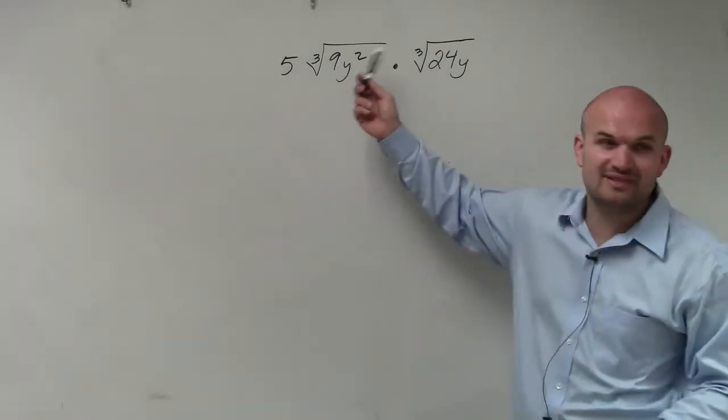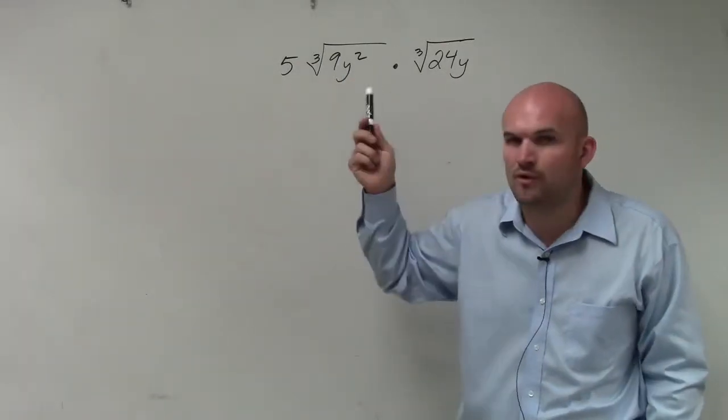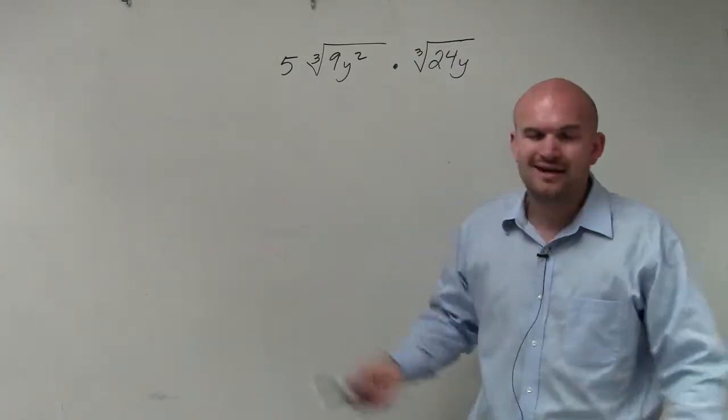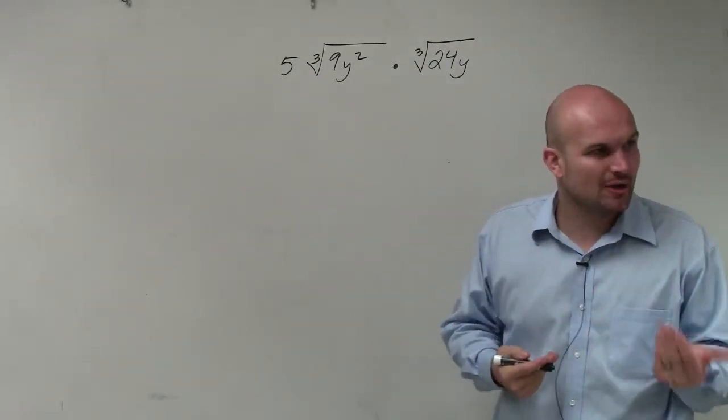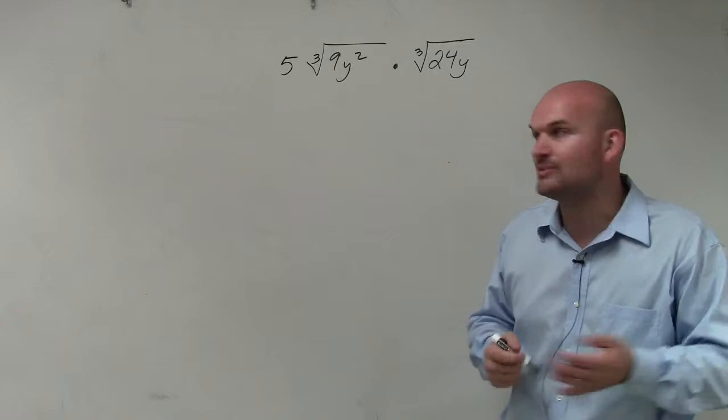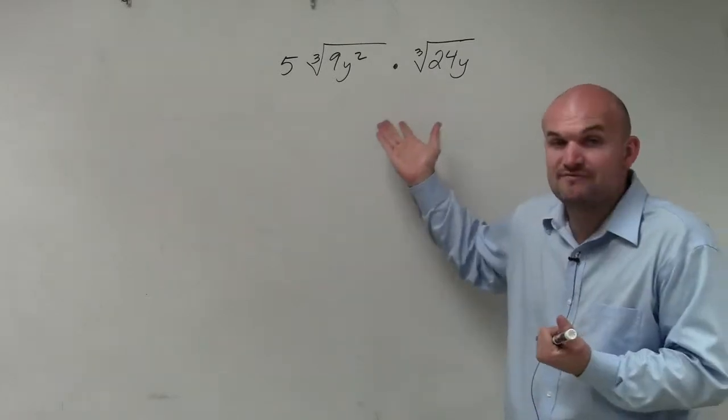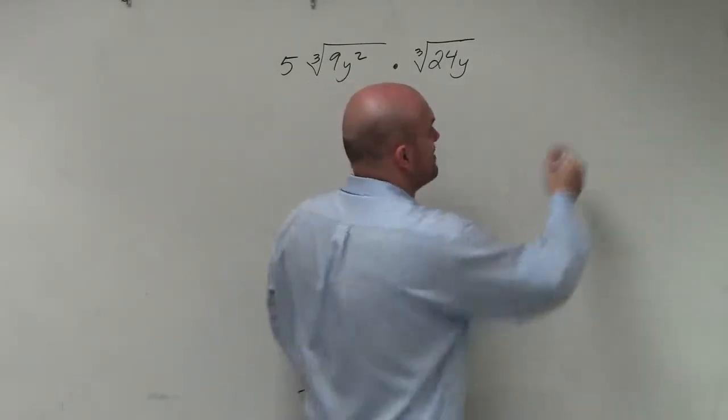But I don't really want to multiply 9 times 24. I could multiply and then simplify it, I just don't really want to do it. I know I can take the cube root of numbers. So the best thing to do is we could always factor 24 and see what number I'm multiplying by itself three times.